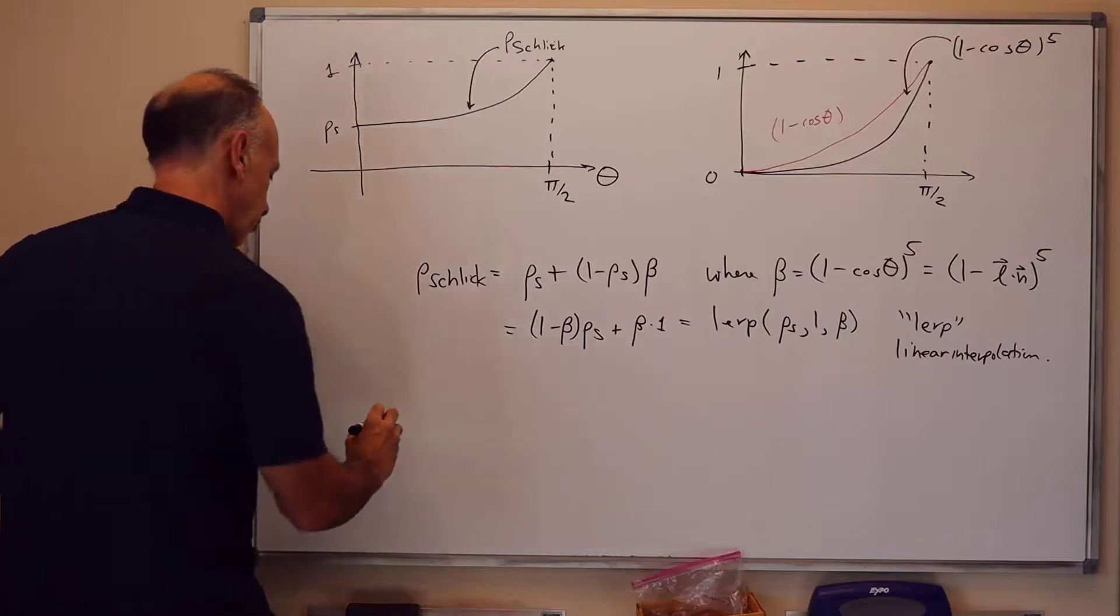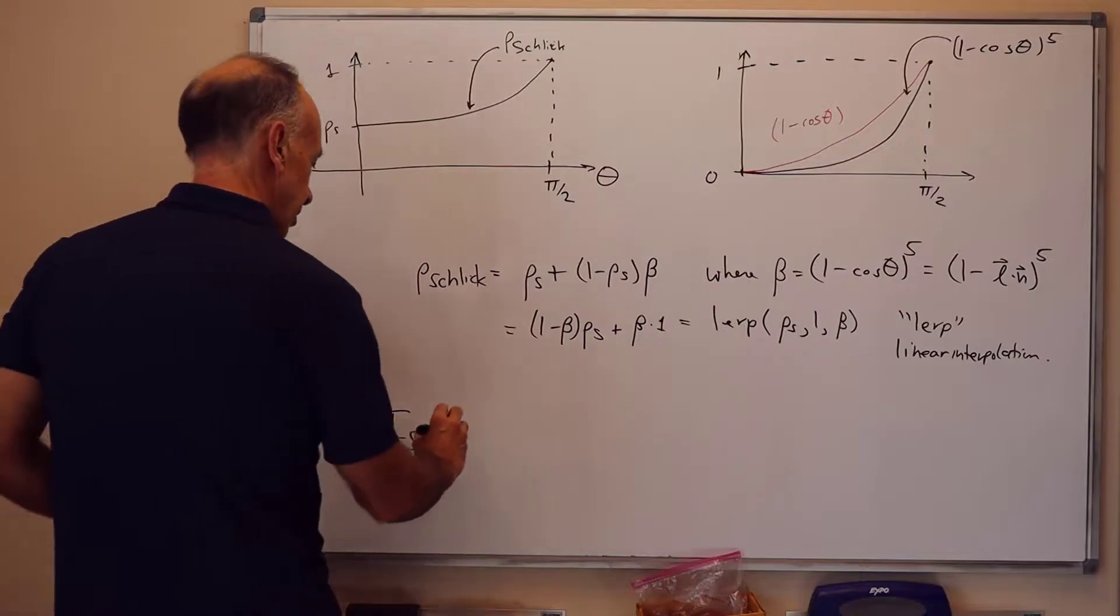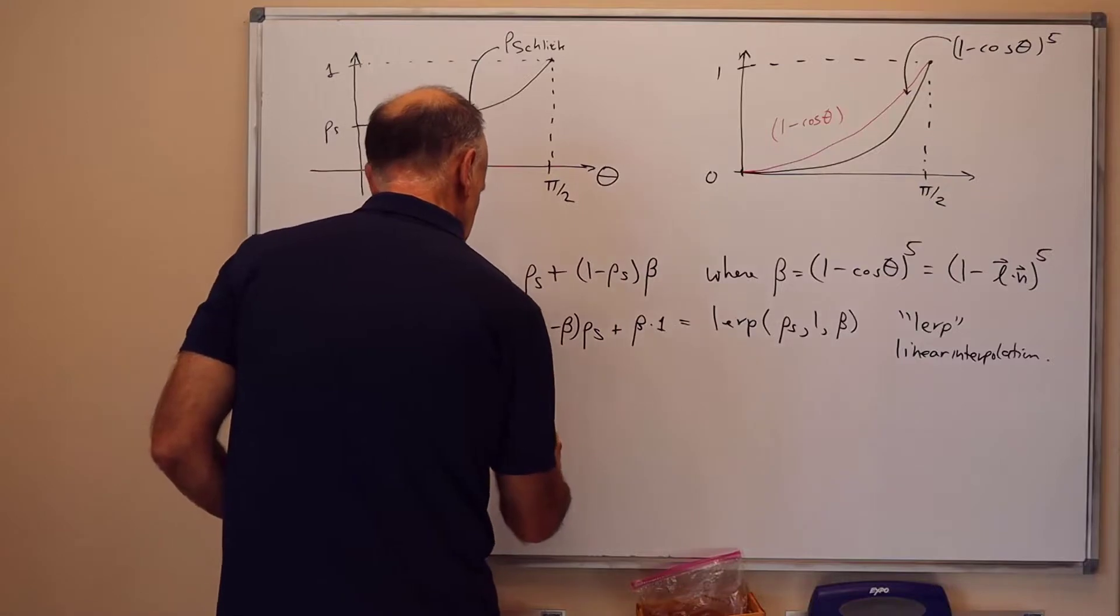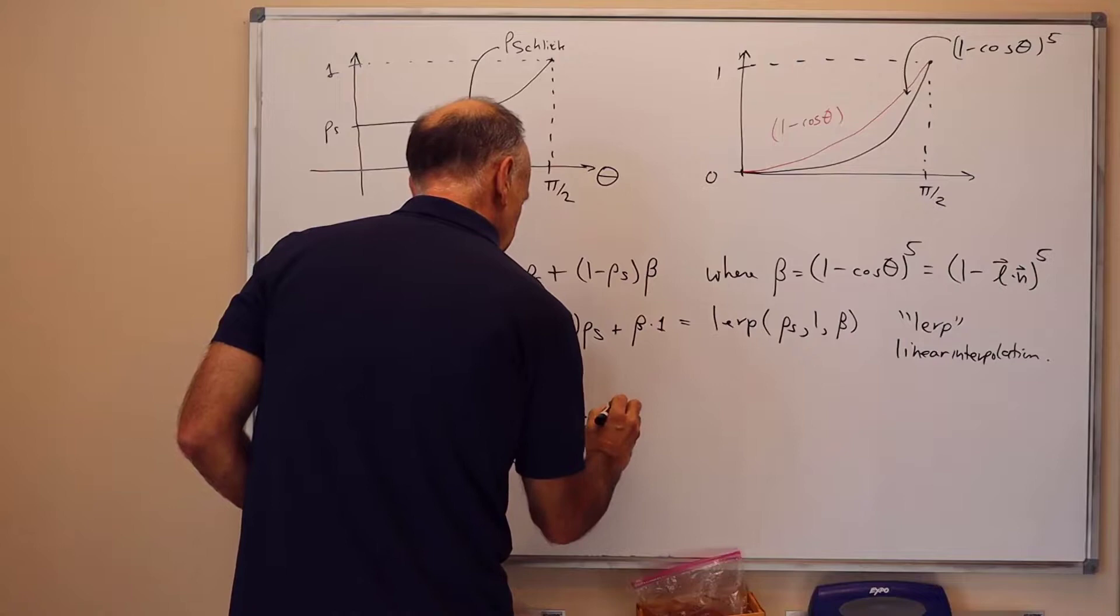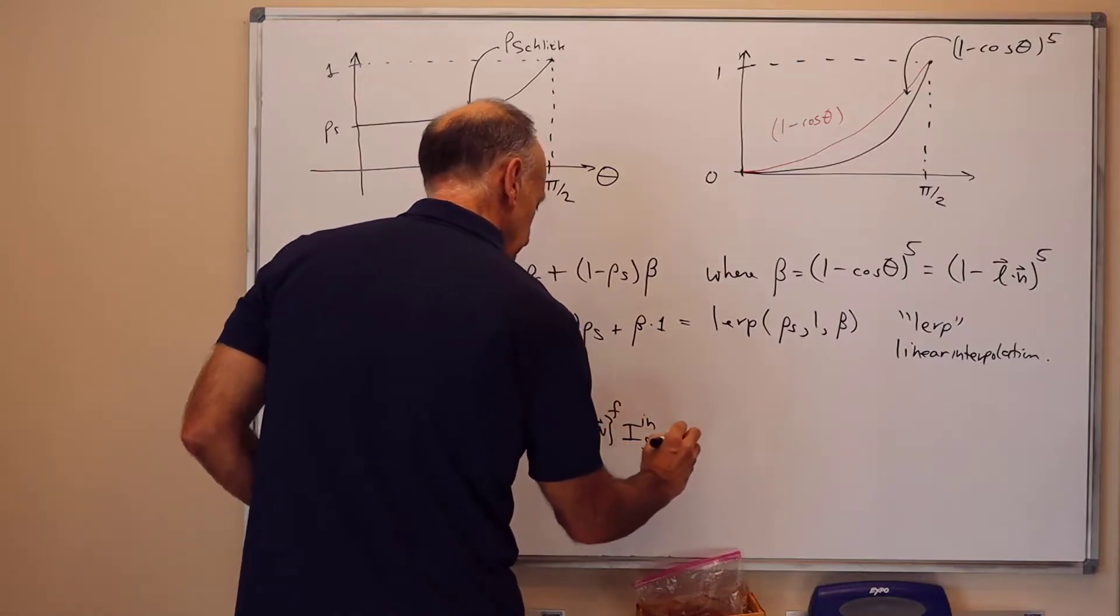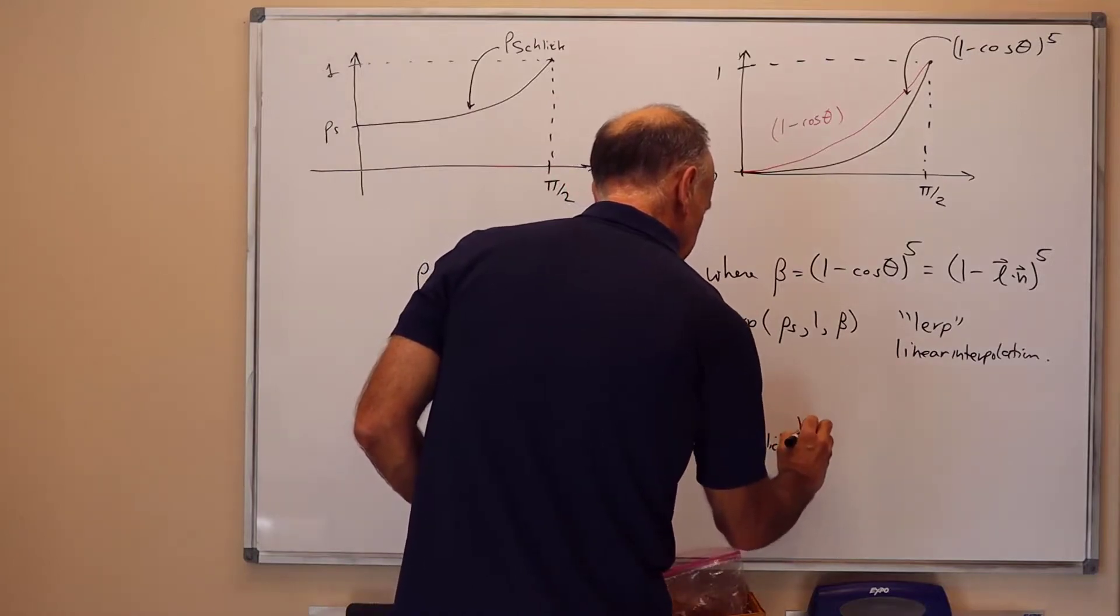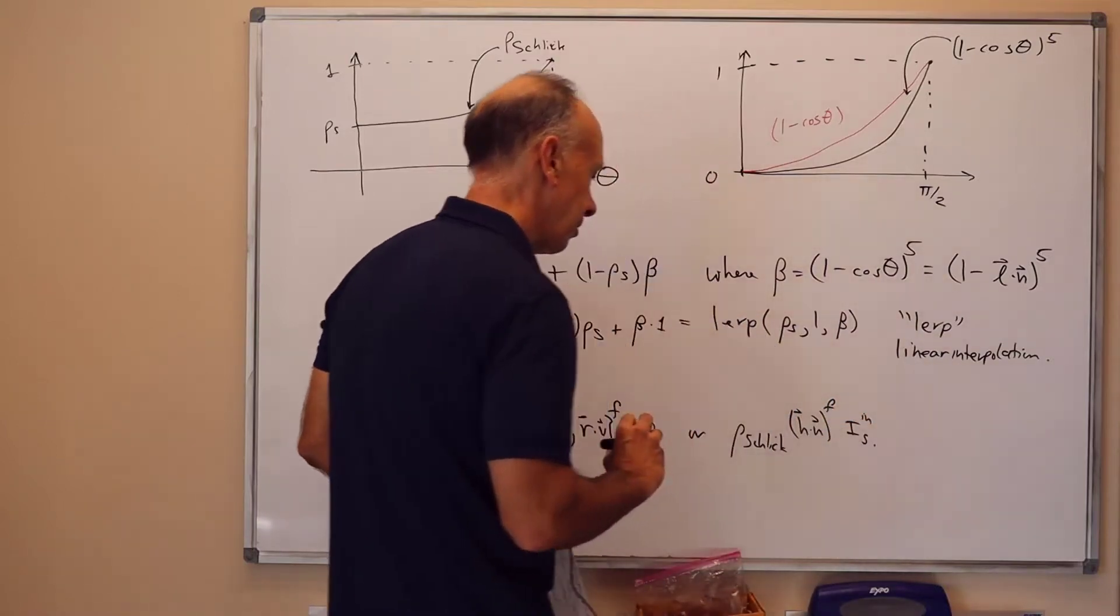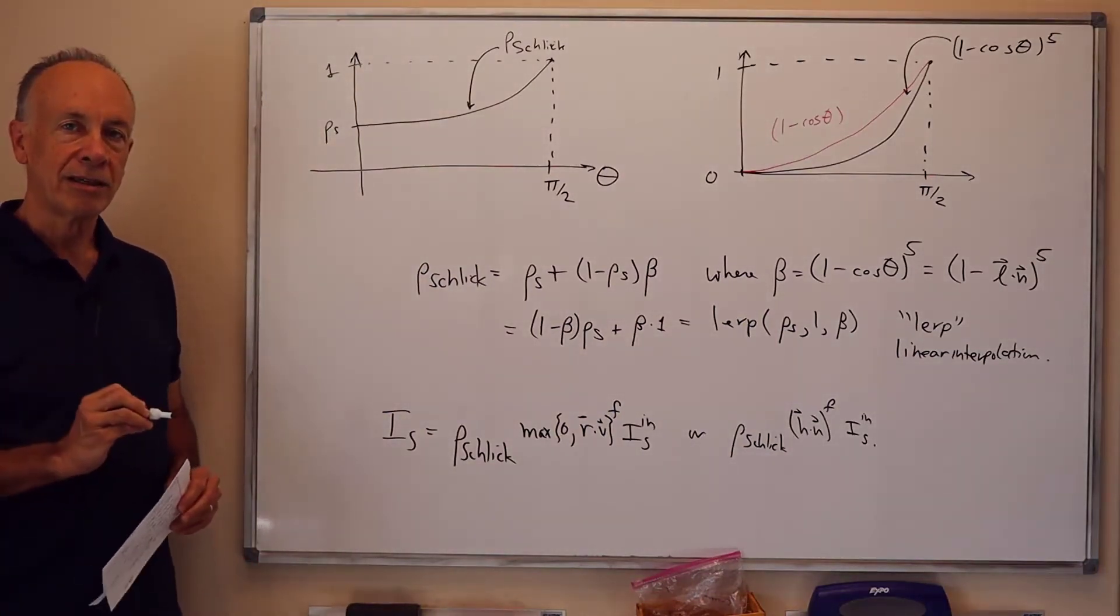So, then our final formula for the specular light is, I s is rho Schlick times the max of 0 in R dot V raised to the power F times I in S. Or, rho Schlick times H dot N raised to the power F times I in S. And this is how we make the Fresnel adjustment using the Schlick simplification.